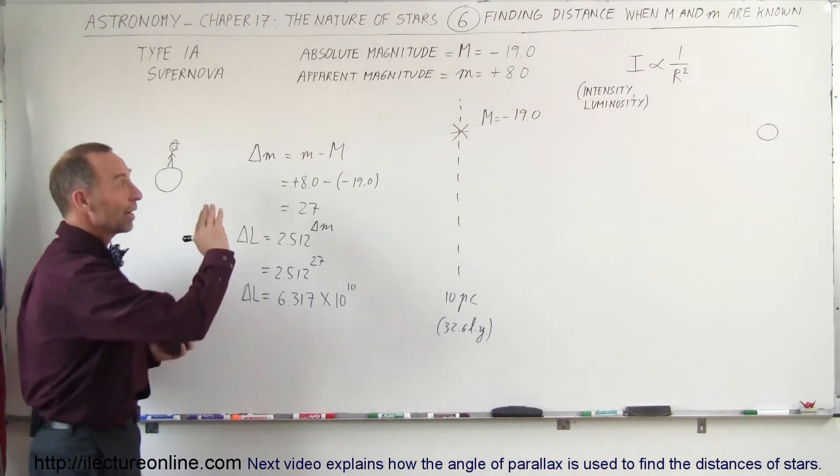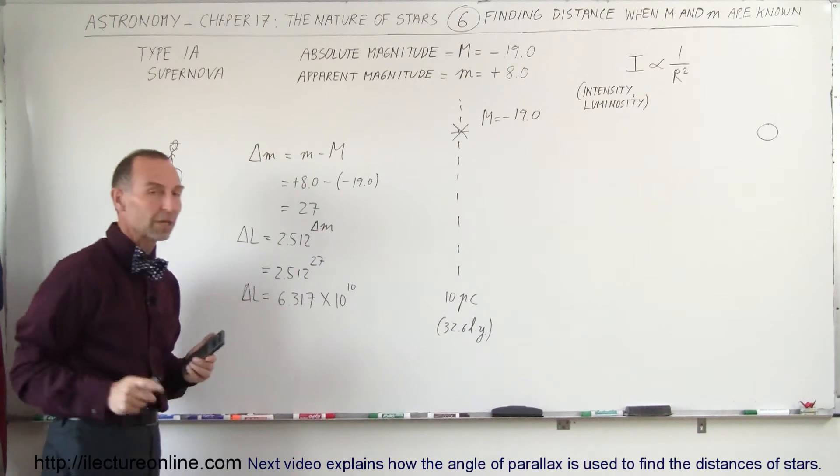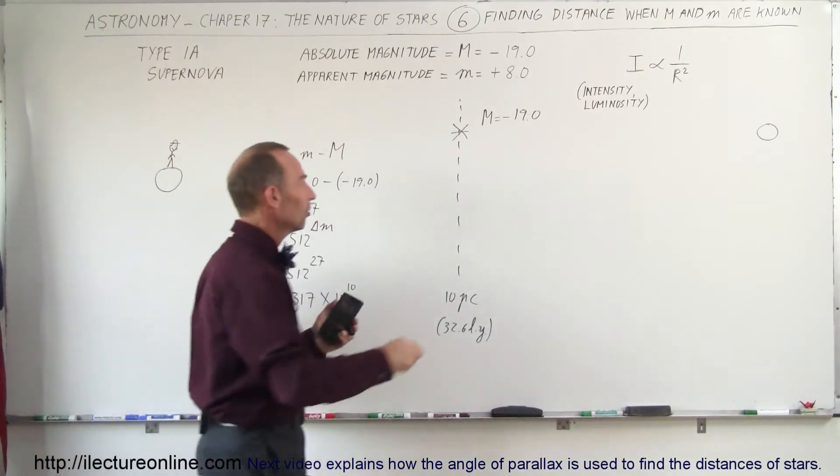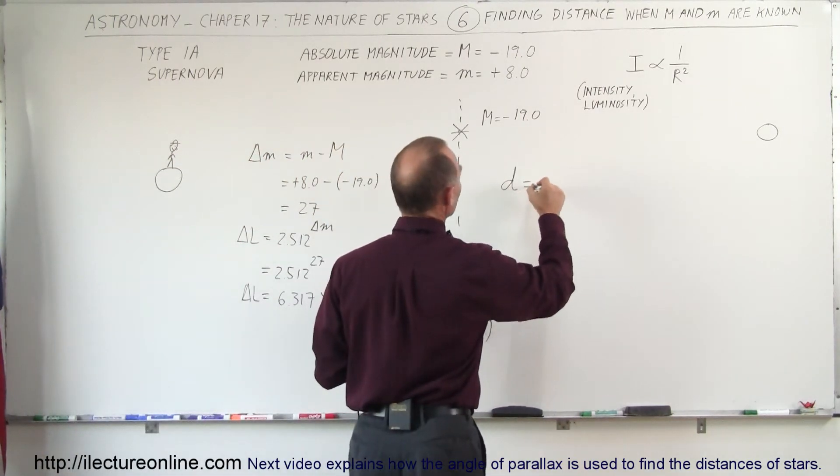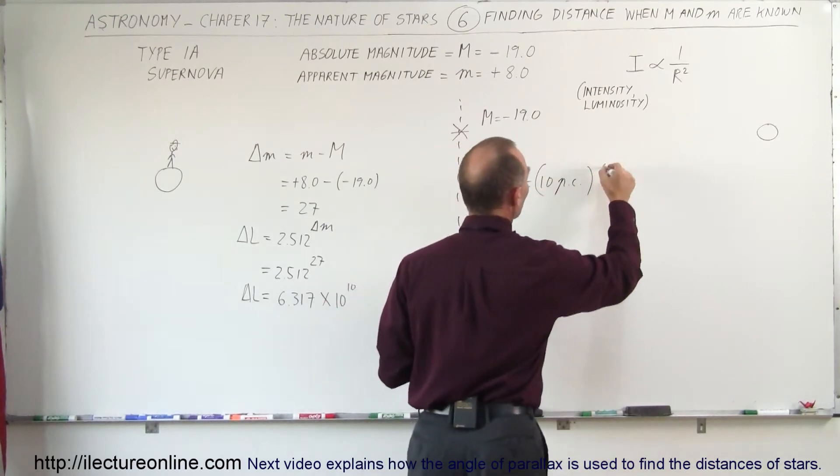If we see it where it actually is compared to what it would be like if we placed it 10 parsecs away. Now for the distance, the distance is going to be equal to 10 parsecs times the square root of the change in the luminosity.